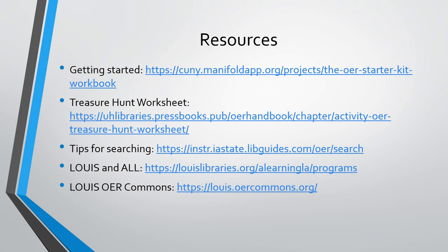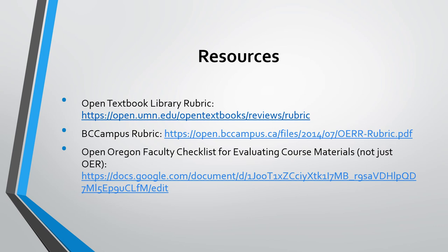Here are some of the resources referred to in this presentation. They include how to get started with the OER Starter Kit, a link to the Treasure Hunt Worksheet, more tips for searching, information on Lewis and Affordable Learning Louisiana, and the Lewis OER Commons. Additional resources include the Open Textbook Library rubric, the BC Campus rubric, and the Open Oregon faculty checklist for evaluating course materials — which is not just for OER, but can be used in that capacity as well.